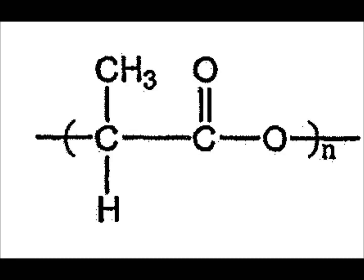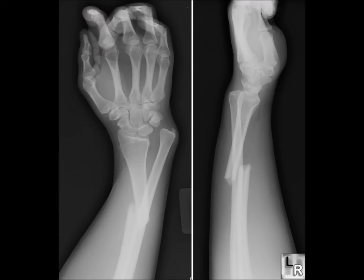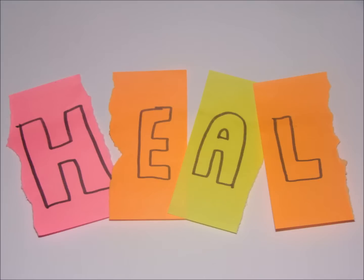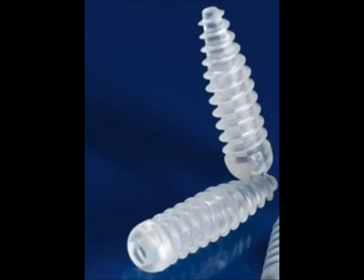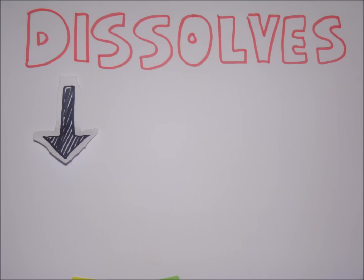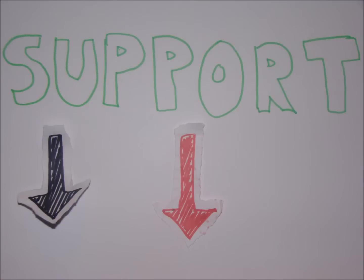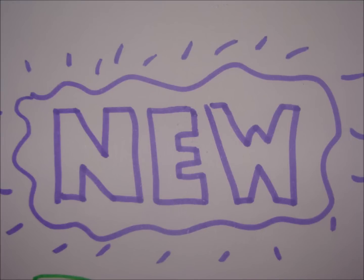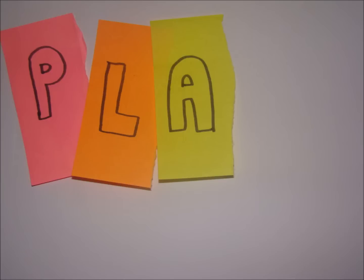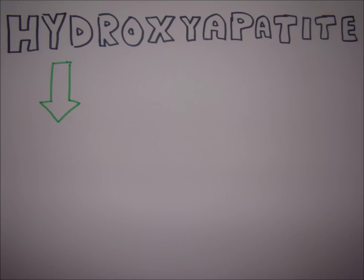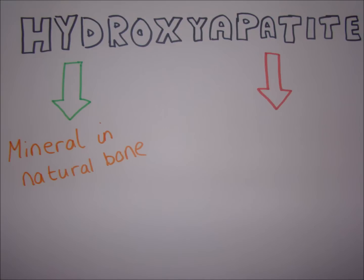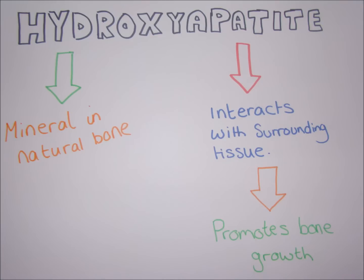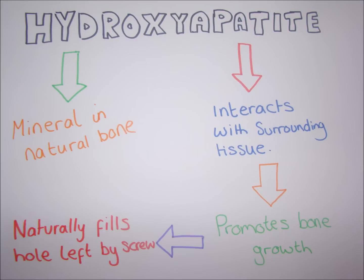Another use for polylactic acid is screws for holding fractured bones together whilst they heal. The PLA screw gradually breaks down, transferring the support role to the bone as it heals. A new screw has now been developed containing polylactic acid and hydroxyapatite, which solves the problem of holes left by PLA screws.